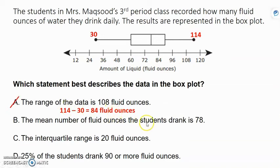The mean number of fluid ounces the students drink is 78. Mean? I can't find the mean of a box plot. I need the data set. So that's false.